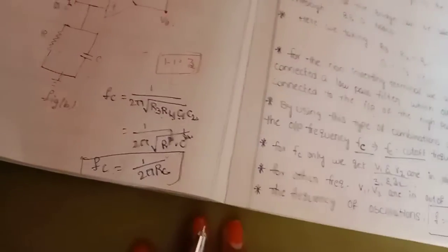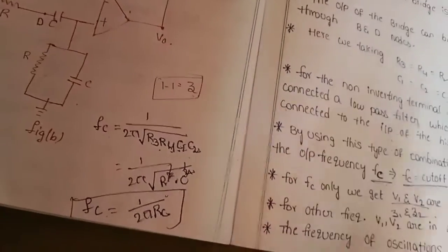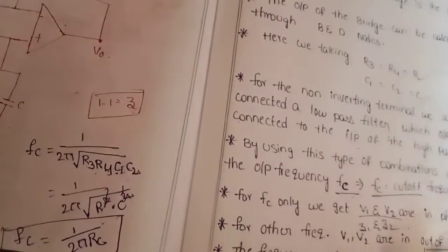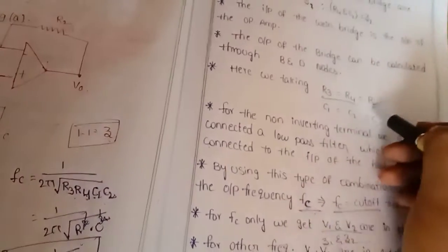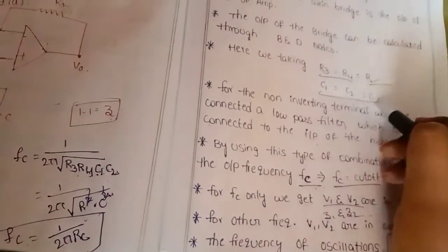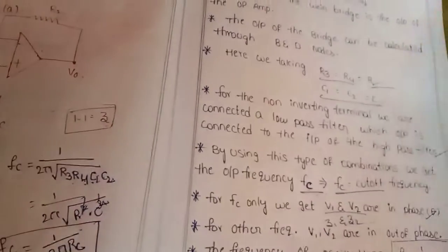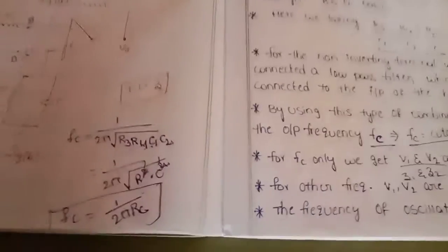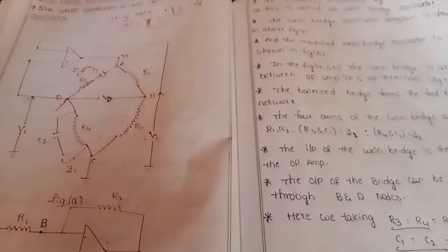This result is possible only when we select identical resistances R3 = R4 = R and identical capacitances C1 = C2 = C. This is the sine wave generator. If you have any doubts, please write in the comment section and I will respond. Thank you for watching.